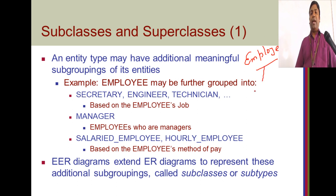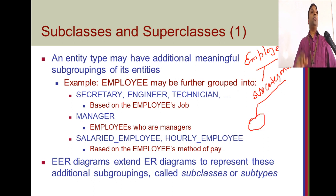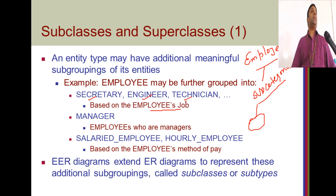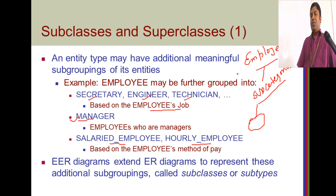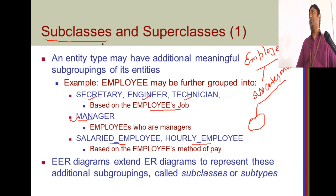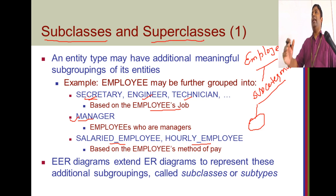An employee will have subcategories. For each category of employee, there can be specific attributes. We have three categories: based on the employee's job — secretaries, engineers, technicians; those managing departments are called managers; and based on method of payment — salaried employees and hourly employees. These subcategories are called subclasses. Secretary is a subclass whereas employee is a superclass. Secretary is an employee, engineer is an employee — so it's pure inheritance, an ISA relationship.